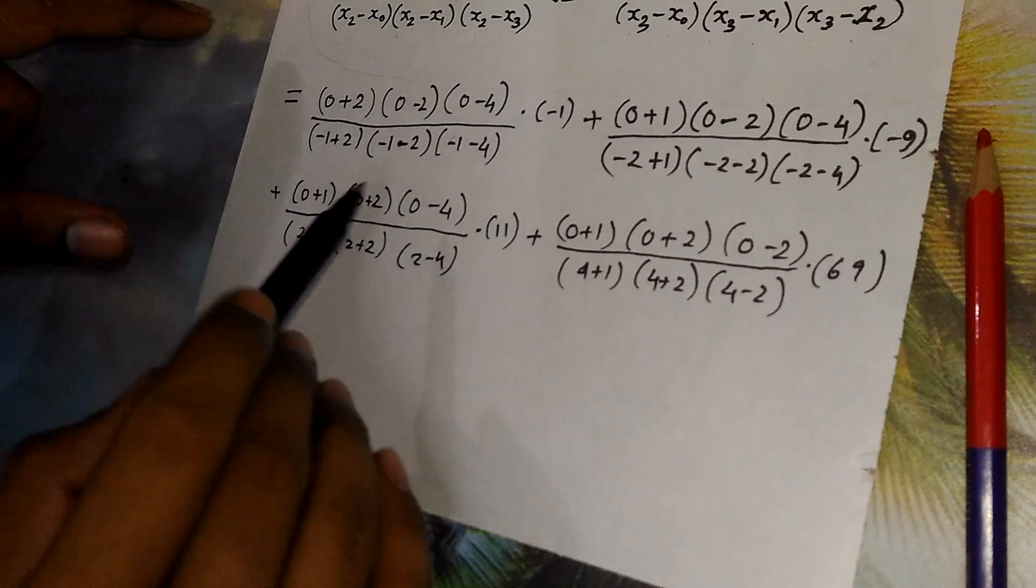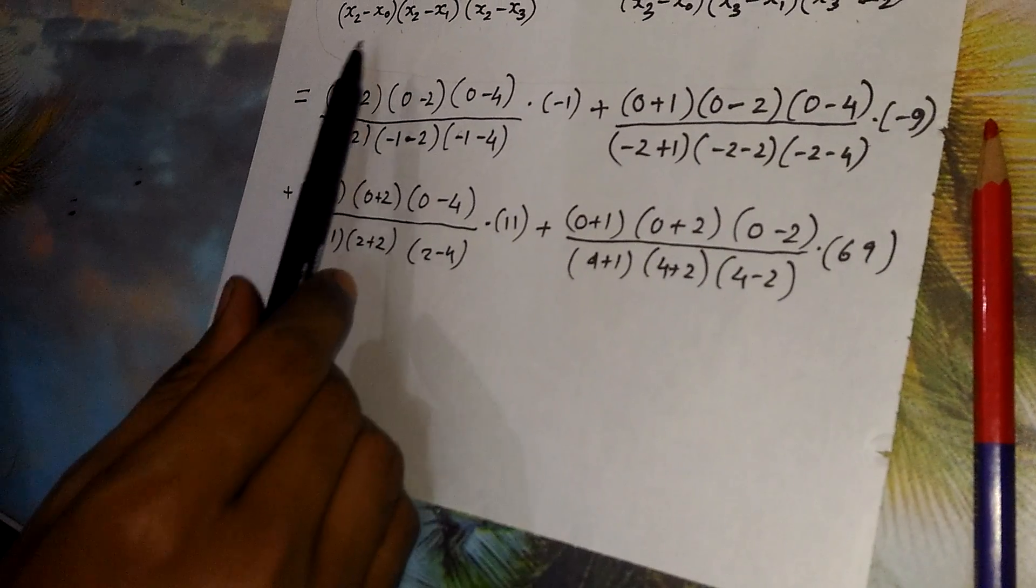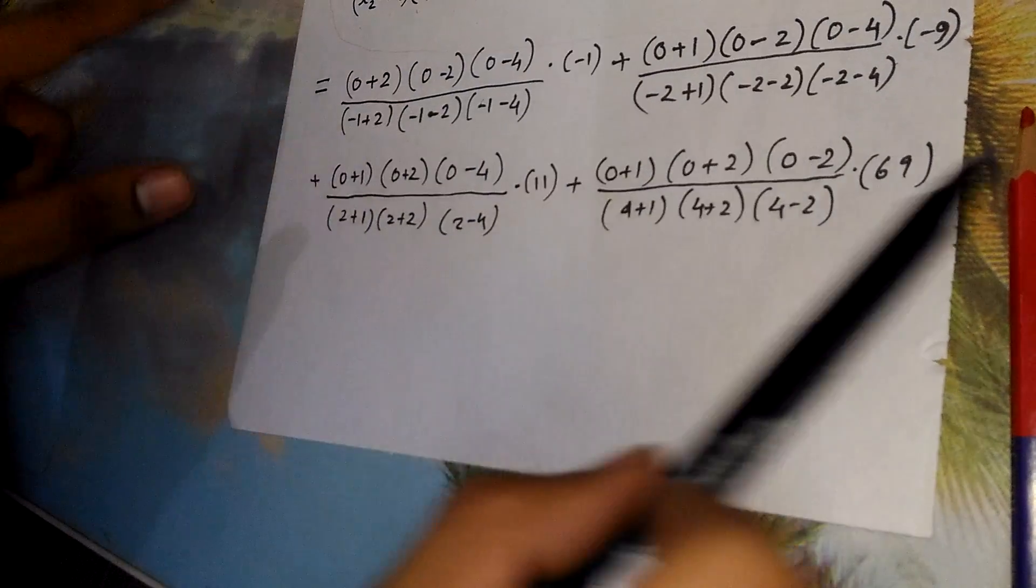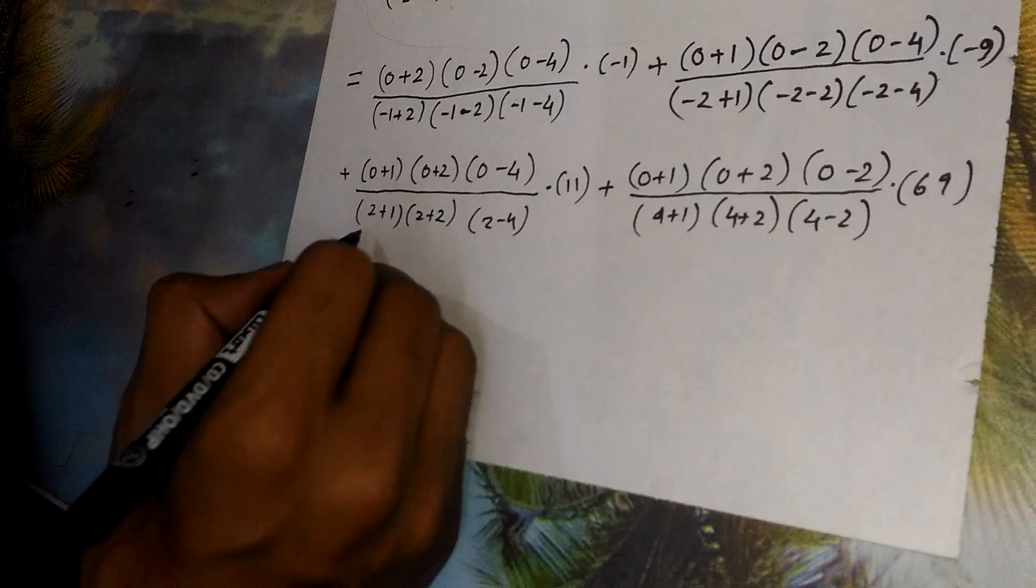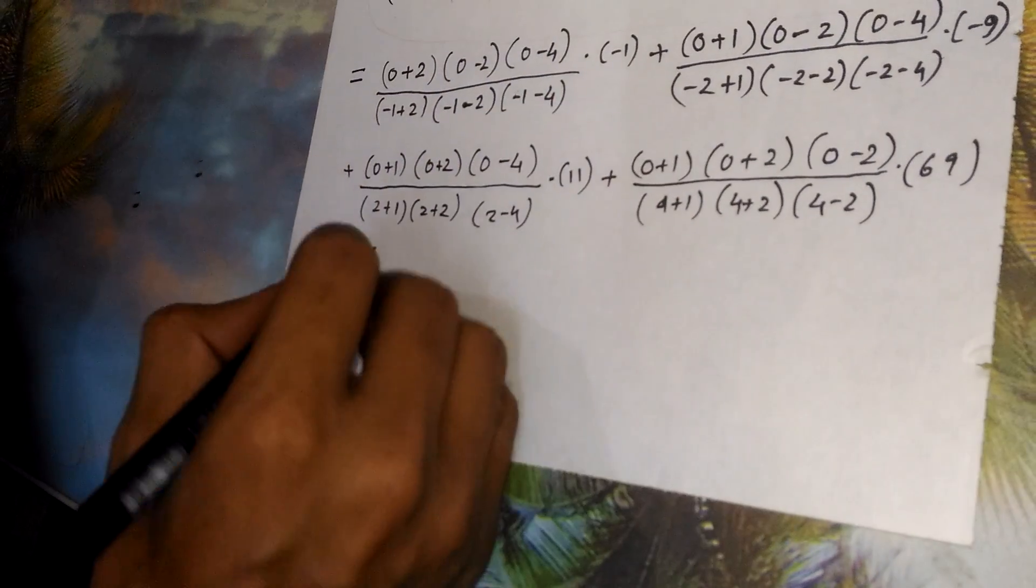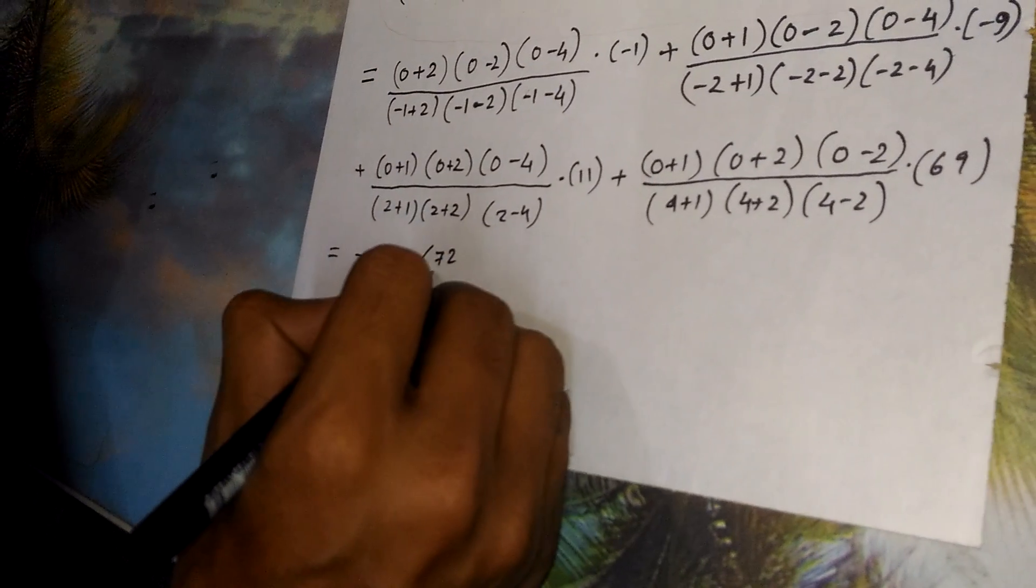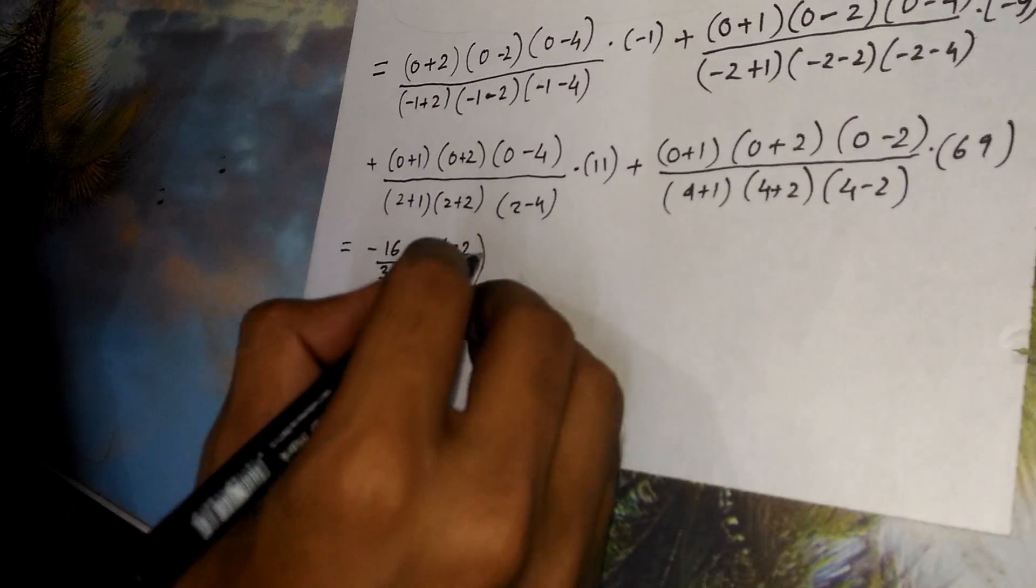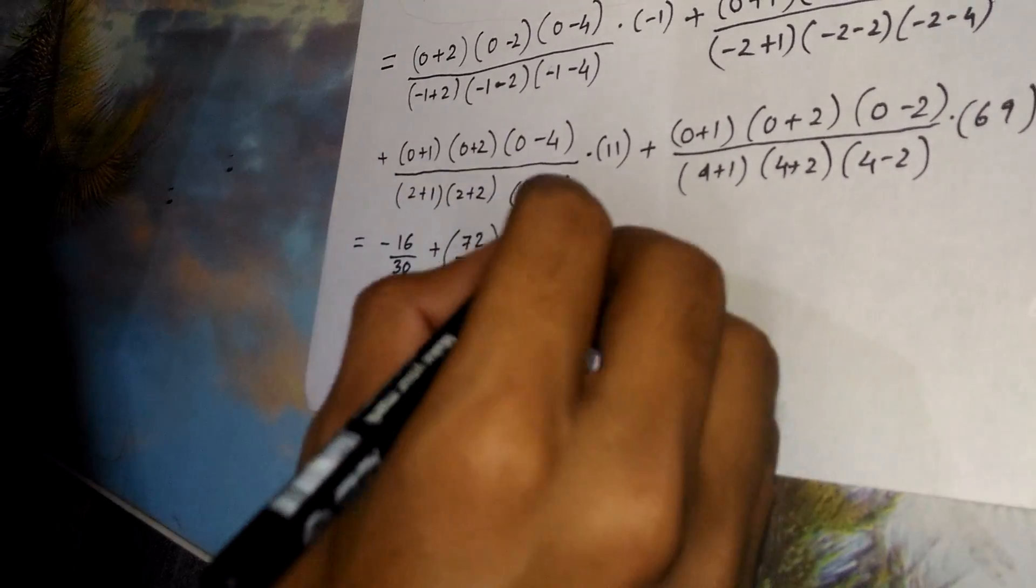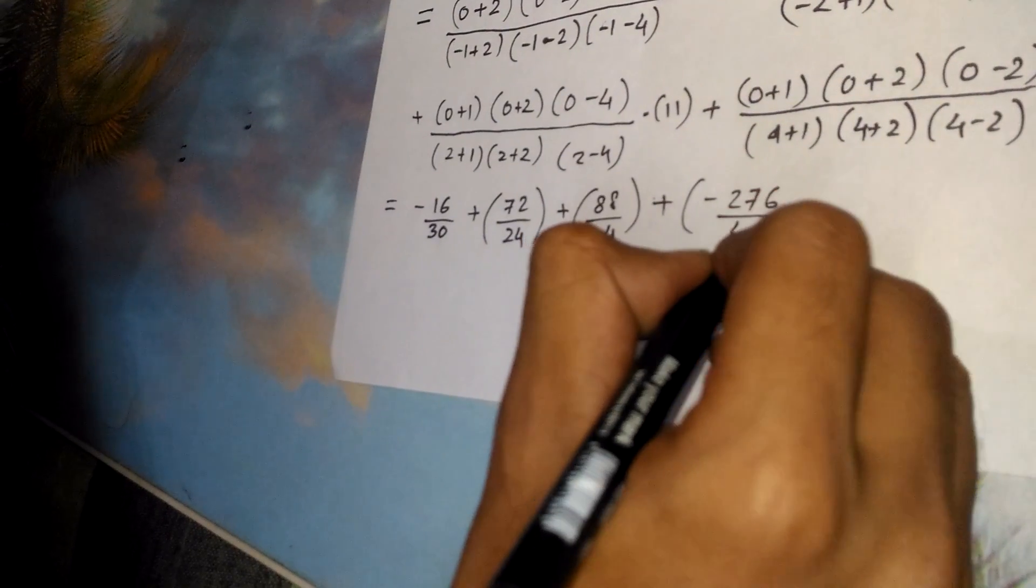Now I hope you all get it how I got the terms. Since here the x1 term is minus 2, so I have written 0 plus 2, minus minus is plus, like that I have covered all the steps. Now from the first step I get it's minus 16 by 30. From the second step I get 72 by 24. From the third step I get 88 by 24.